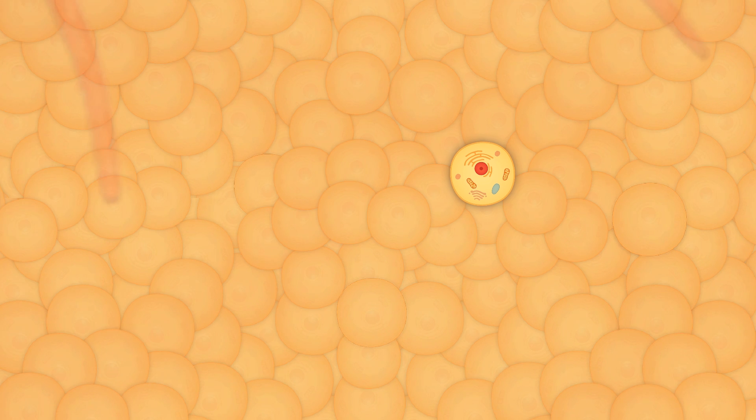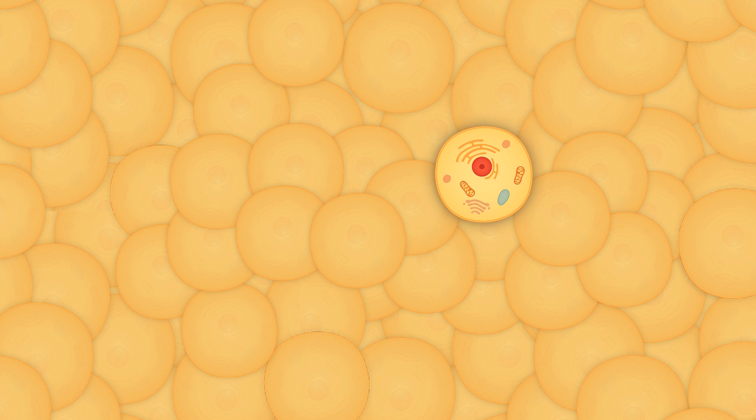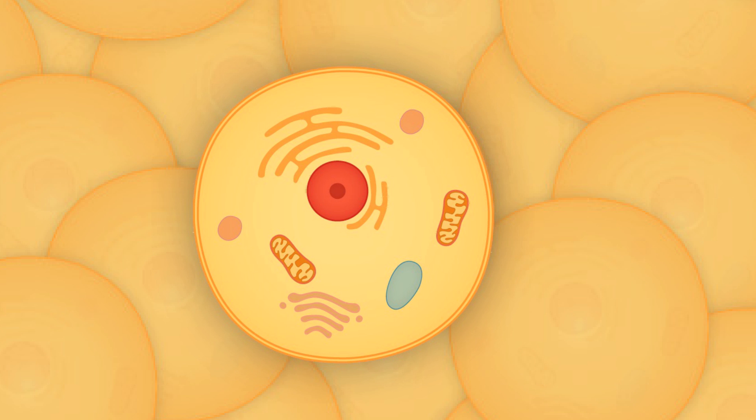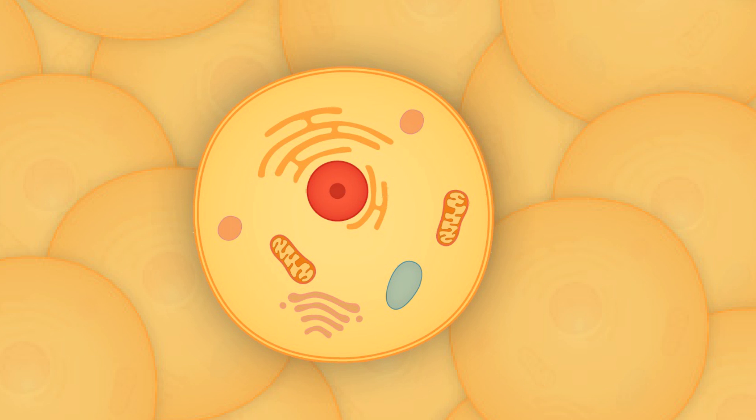The cell is the basic structural and functional unit of all known living organisms. It is the smallest unit of life and is often called the building block of life. Every one of our cells is a little miracle.